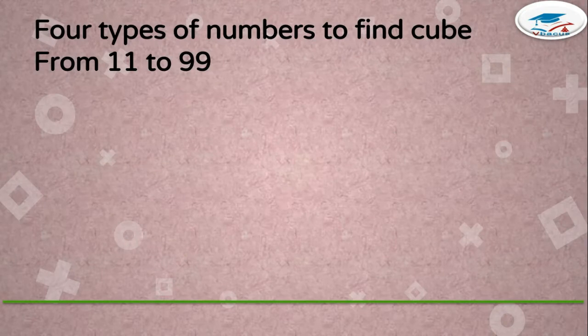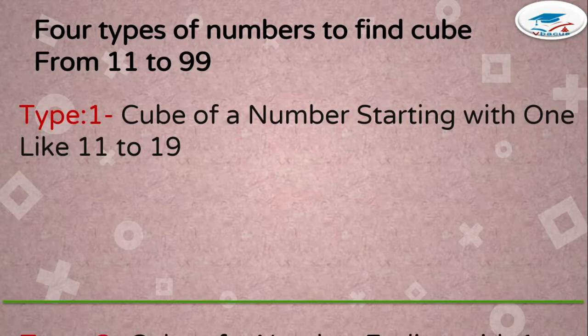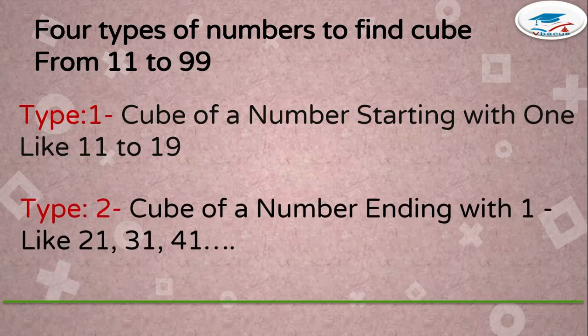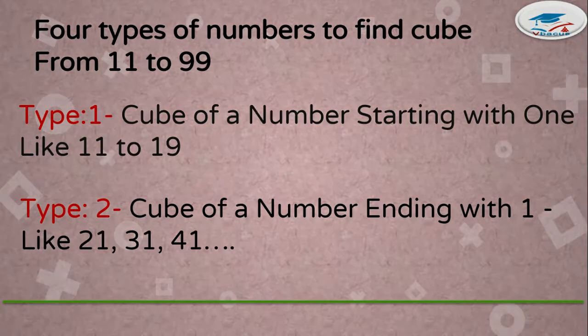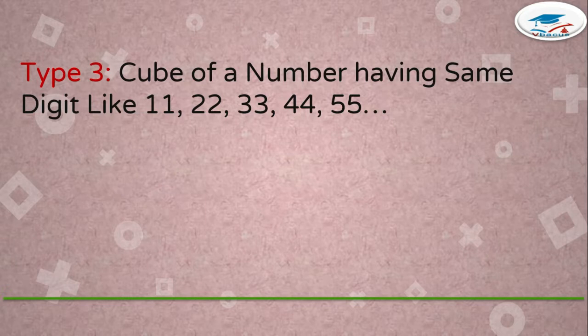There are four types of numbers to find cube from 11 to 99. Type 1: cube of a number starting with 1, like 11 to 19. Type 2: cube of a number ending with 1, like 21, 31, 41, and so on. Type 3: cube of a number having same digit, like 11, 22, 33...